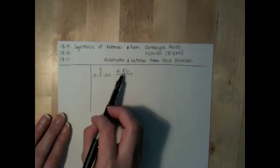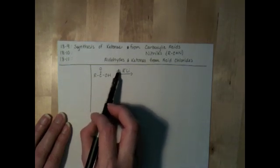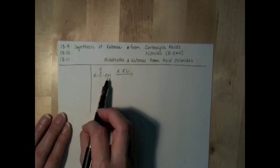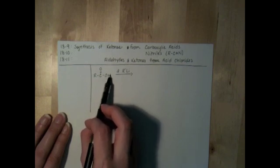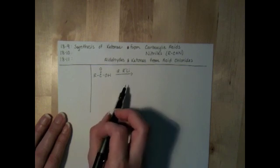If your organolithium reagent is really expensive or really hard to make, you may want to use some kind of cheap base like sodium hydroxide to deprotonate the carboxylic acid. And if you were to do that, then you would only need one equivalent of the organolithium.